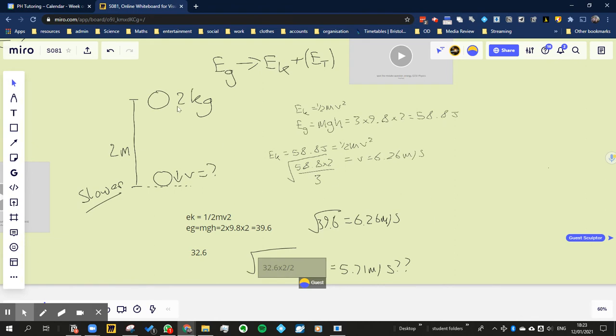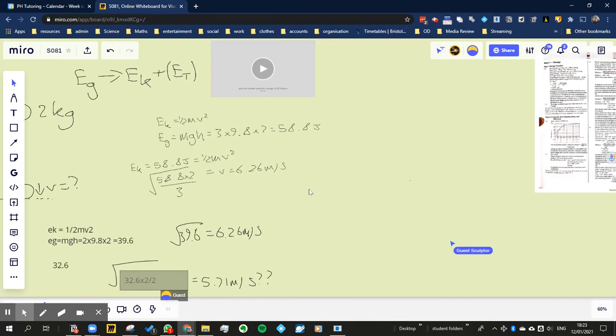So it seemed that it doesn't matter what the mass is. If I drop an object from 2 meters, as long as we're talking about the planet Earth, where the gravity is 9.8, then it's still going to always hit the ground at 6.26 meters per second. So let's just try to work it out in terms of algebra.